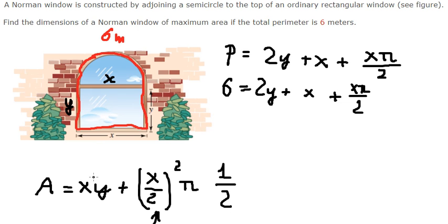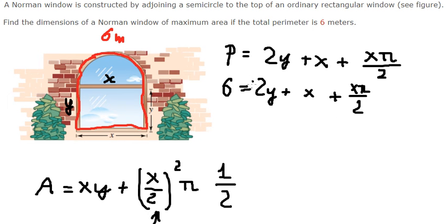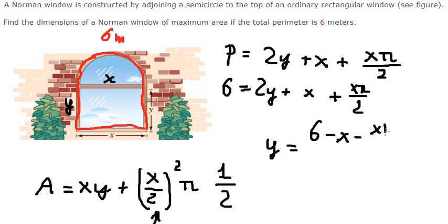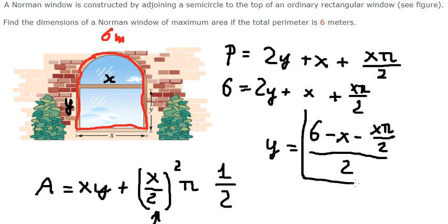So the next step: we have y and also y in here, so I will move this one to the left. Then we divide both sides by the number two, so y will be expressed in terms of s. Now I will substitute this expression for y into the area formula.